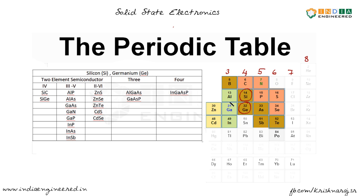Elements within the fourth group form some of the compound semiconductors — namely silicon carbide (SiC) and silicon germanium (SiGe).